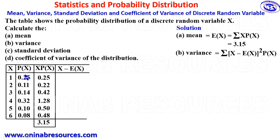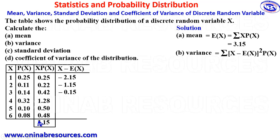We start with x minus E(x), where we subtract 3.15 from each x value. So: 1 minus 3.15 gives negative 2.15; 2 minus 3.15 gives negative 1.15; 3 minus 3.15 gives negative 0.15; 4 minus 3.15 gives 0.85; 5 minus 3.15 gives 1.85; 6 minus 3.15 gives 2.85.